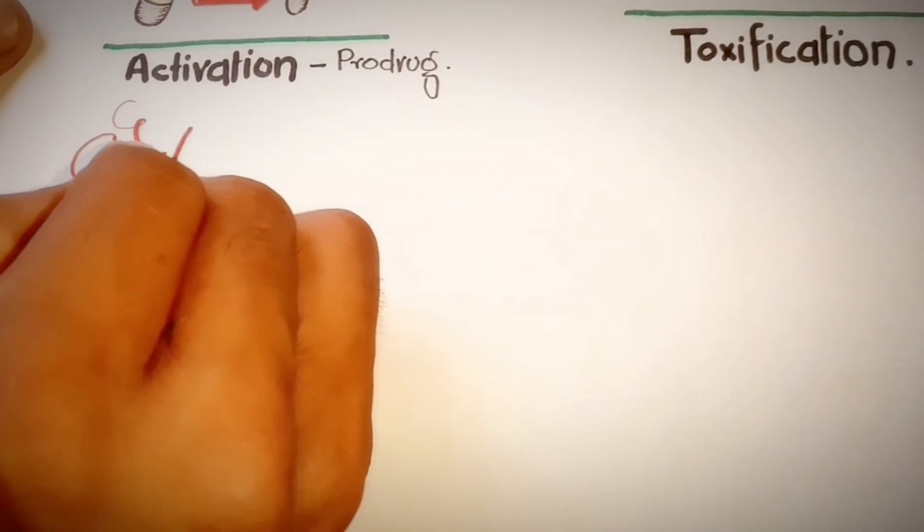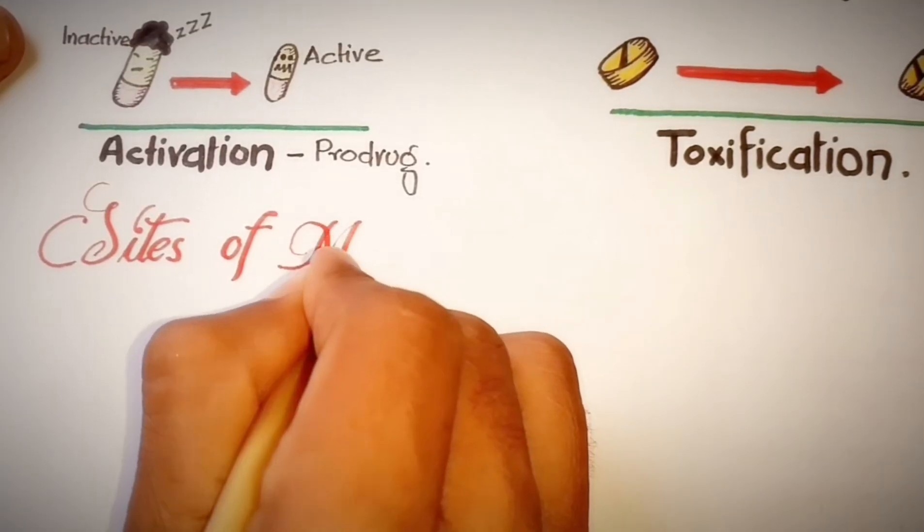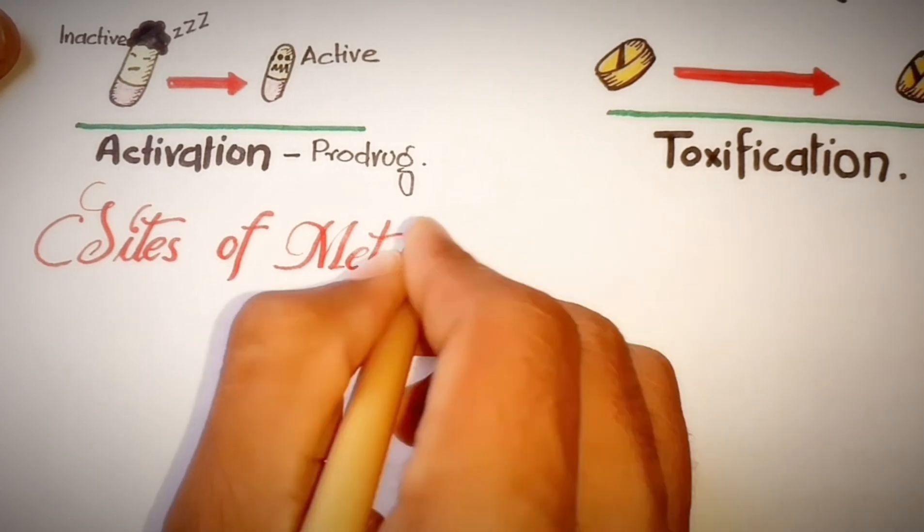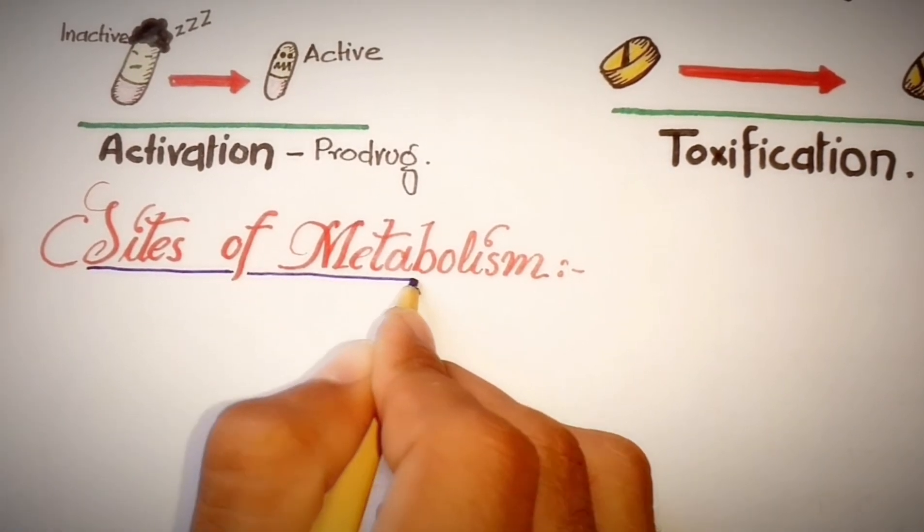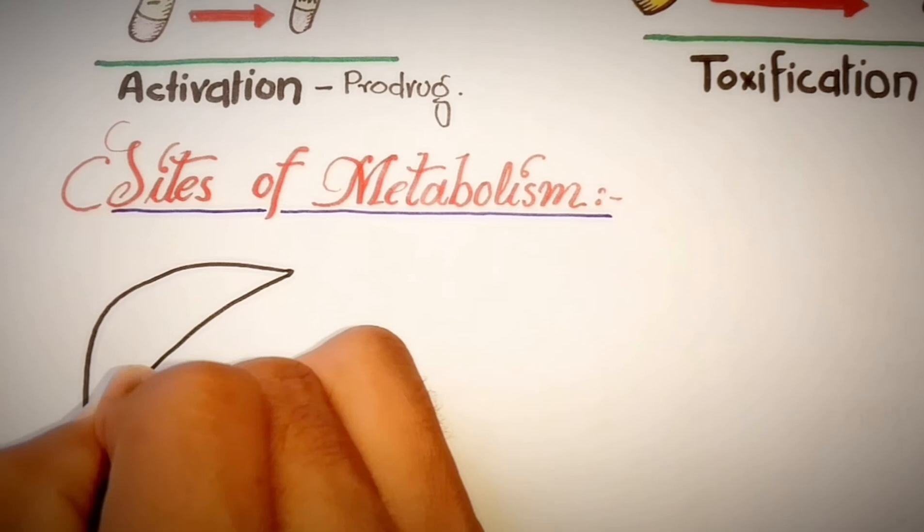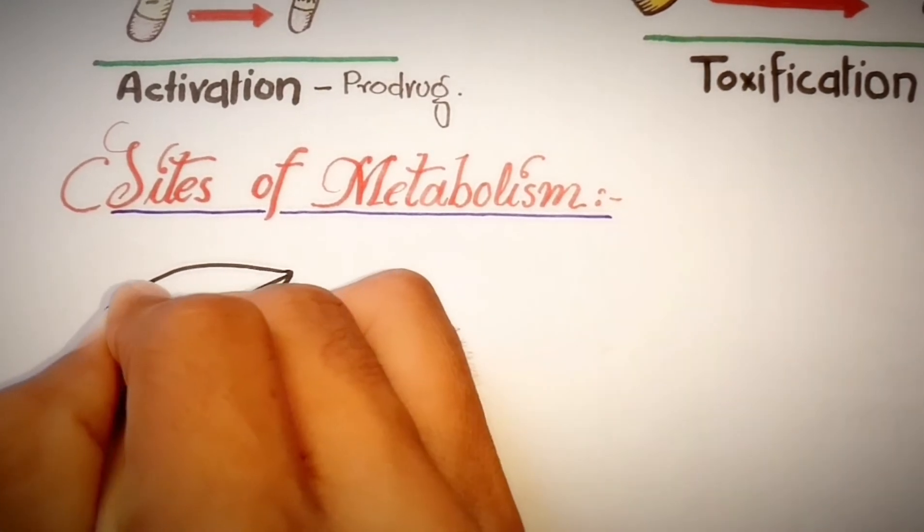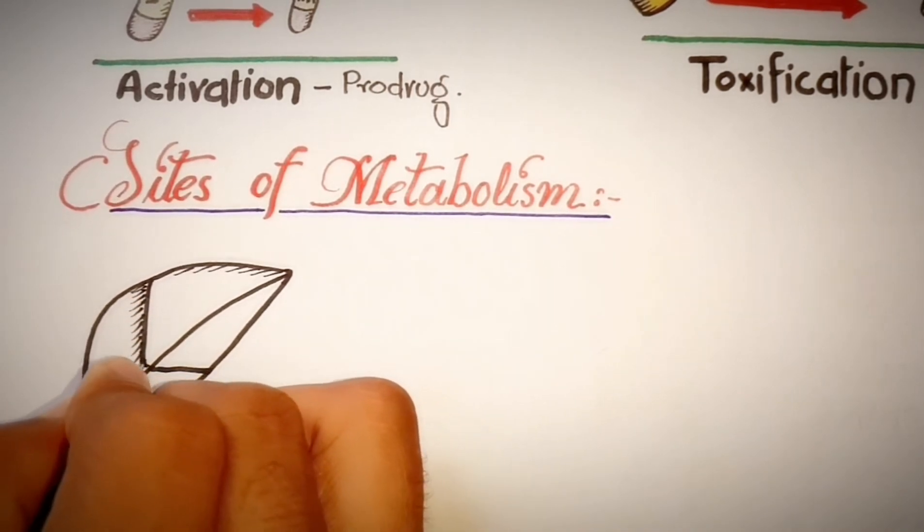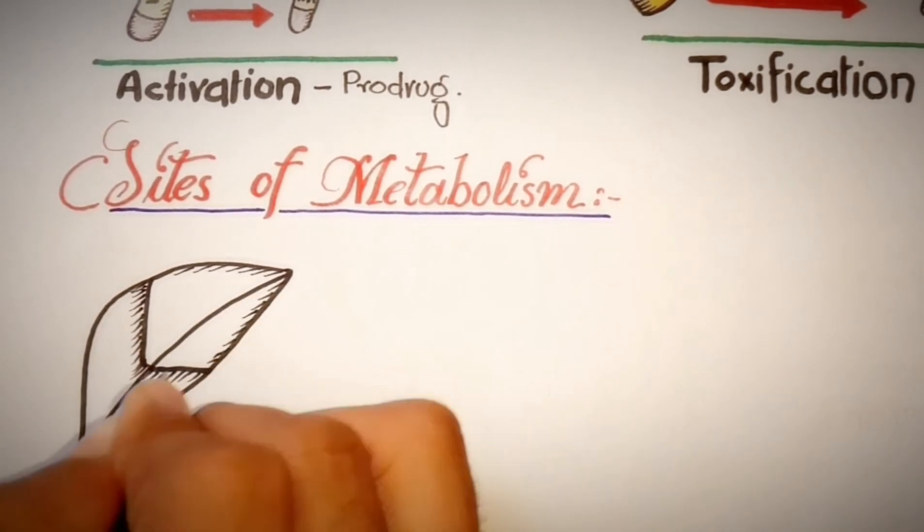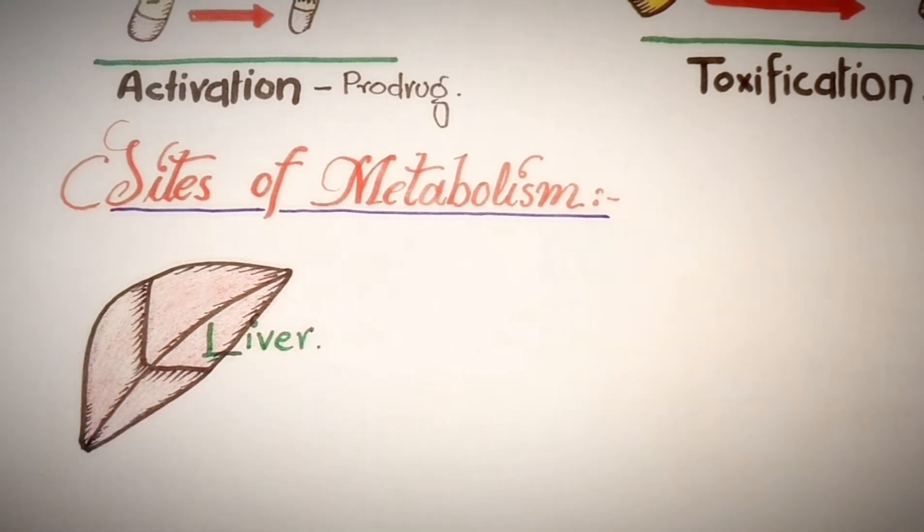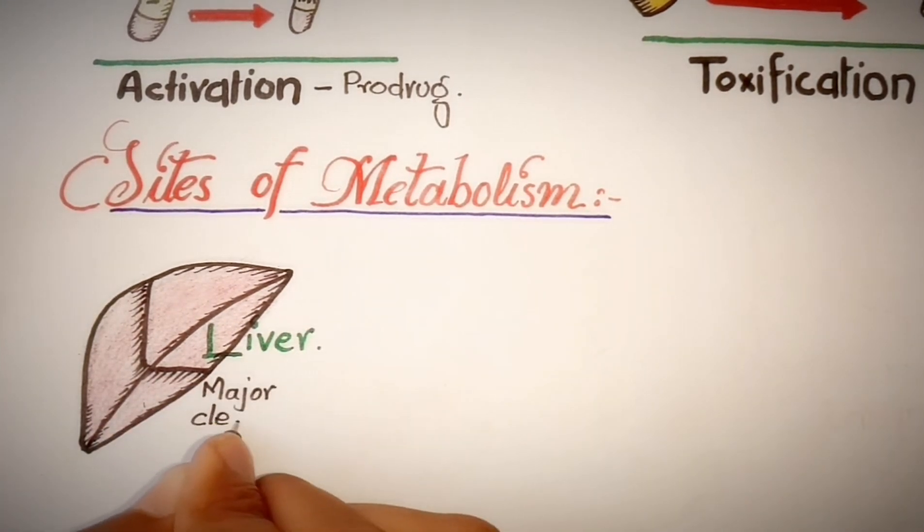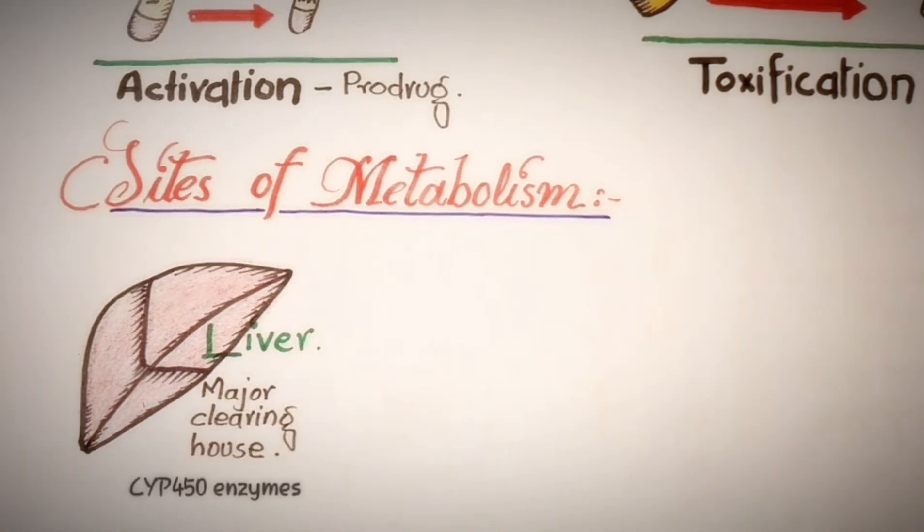Drug sites of metabolism: Although drug metabolism occurs in almost all tissues, the sites responsible for the metabolism of a large number of drugs contain drug metabolizing enzymes. Number first is the liver. Liver is the major site because of its strategic place in the portal circulation and its many metabolic enzymes like CYP450 enzymes. The liver is considered the major metabolic clearinghouse for both endogenous chemicals like cholesterol and hormones and most xenobiotics.